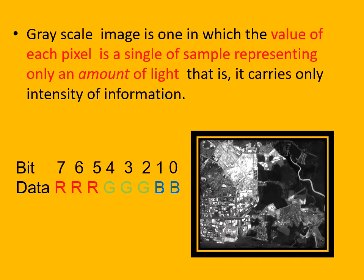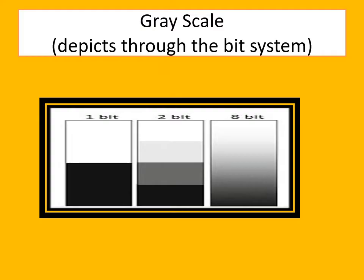Grayscale is related to panchromatic image. Day and night is a very good natural example of grayscale. Looking at the various levels of grayscale: this is 1-bit, this is 2-bit, and it can be up to 8-bit — 0 to 256. Day and night is a very good example of grayscale, with the intensity of light representing the intensity of reflected EMR and the brightness.